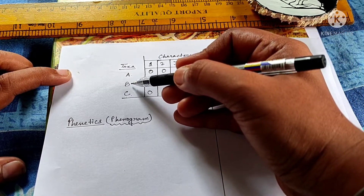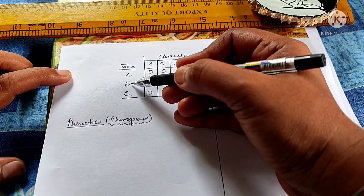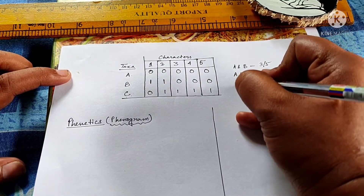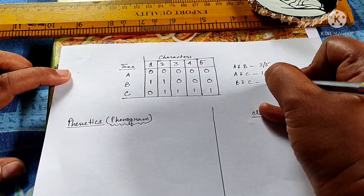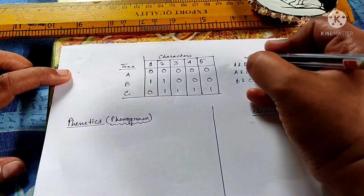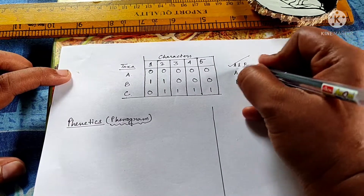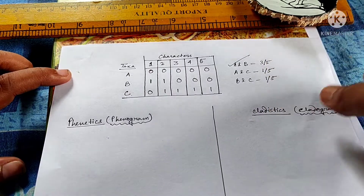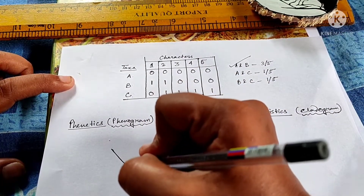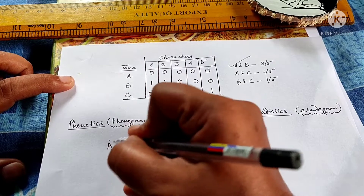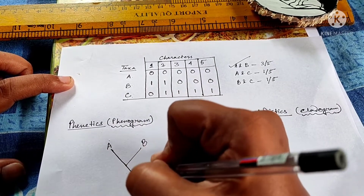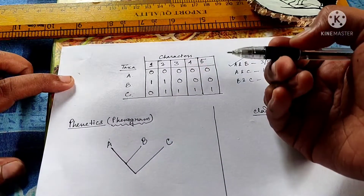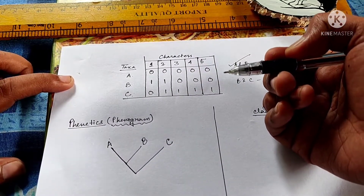How many characters are similar between B and C? Only one character — the second character. So B and C also has similarity in only one character. Based on phonetics, you can clearly say that A and B have more similarity between them because they share three out of five characters, so A and B should be clustered together and C should be the out group, because phonetics is based on overall similarity.